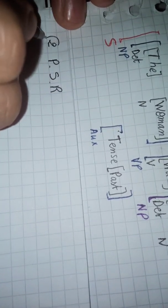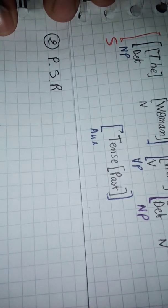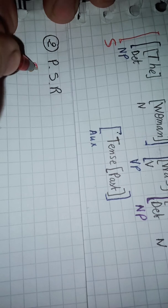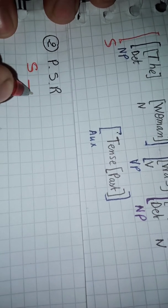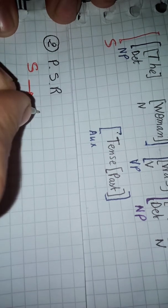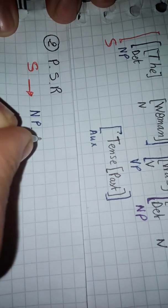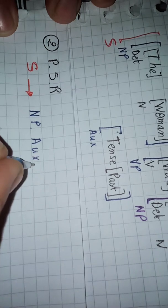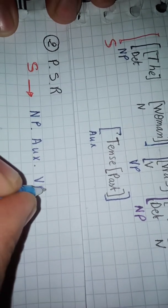Now, the second step is phrase structure rules. So, we write our sentence consists of three elements: noun phrase, an aux, and a verb phrase.